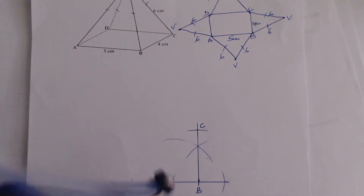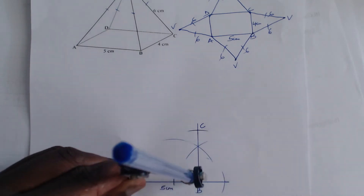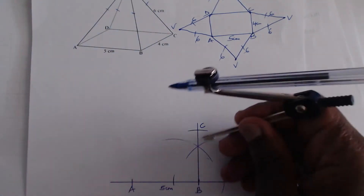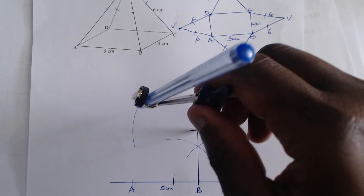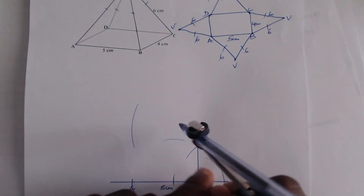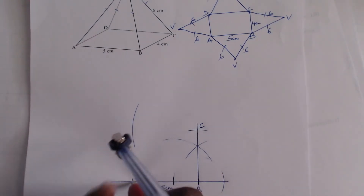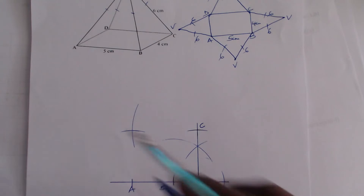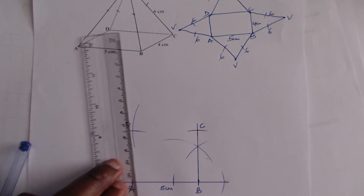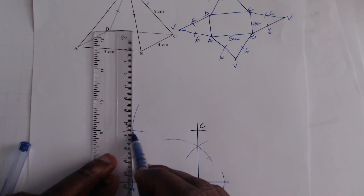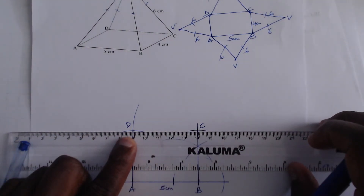D will be somewhere here. First you take the measurement of five, stand here and mark an arc. Then you take measurement BC — that one should be four — stand at A and mark that arc. This is the easiest way to identify point D, so point D is there. Now just join the points.